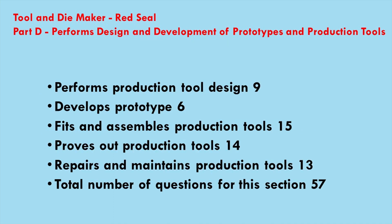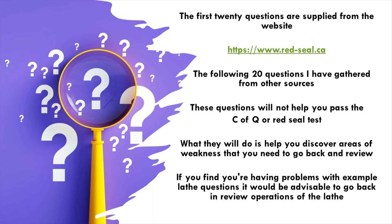Part D: design development, prototyping and production tools, production tool design, prototype design, fits and assembly, production repairs. Part D is the largest section with 57 questions. The first 20 questions are supplied from the website www.redseal.ca. The following 20 questions are gathered from other sources. These questions will not directly help you pass the CFQ or the red seal test, but they will help you discover areas of weakness that you need to go back and review.